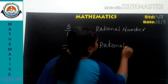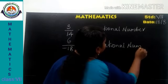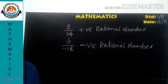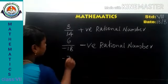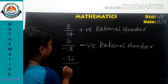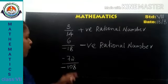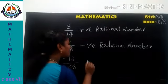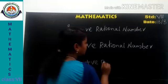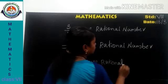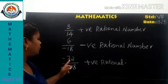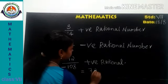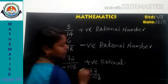Another example: negative 72 by negative 18. Here the numerator is negative and the denominator is also negative, so this is a positive rational number. We can simplify it as 72 by 18.